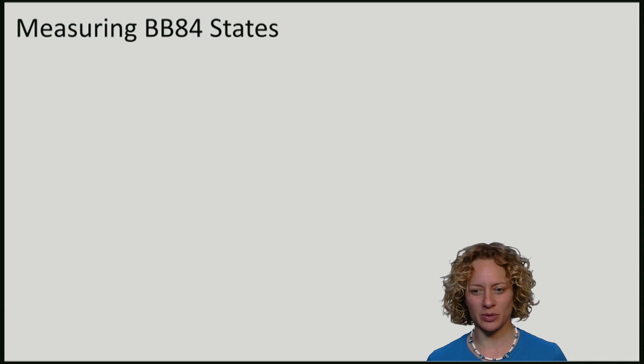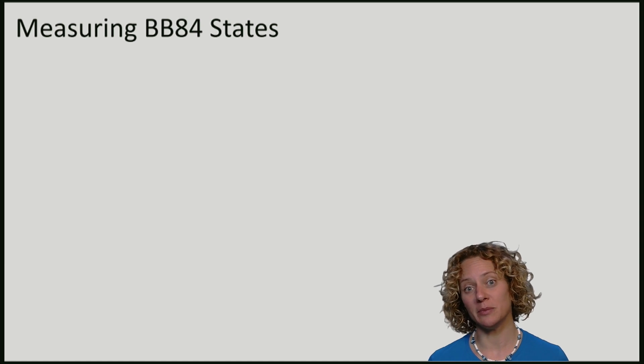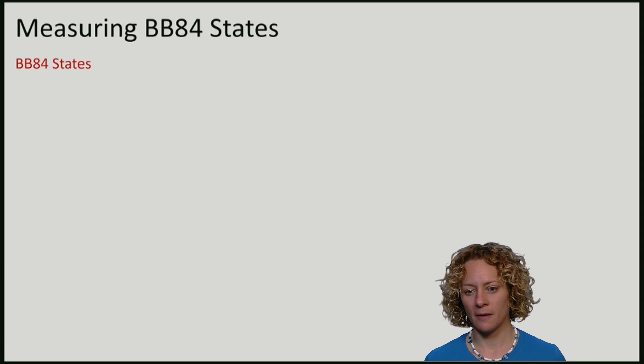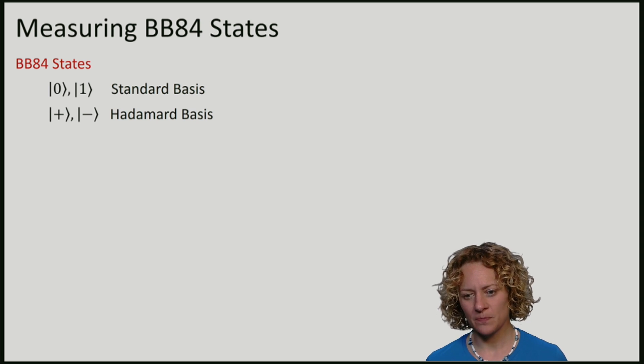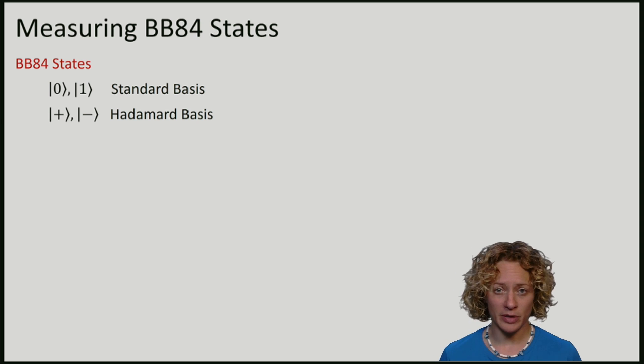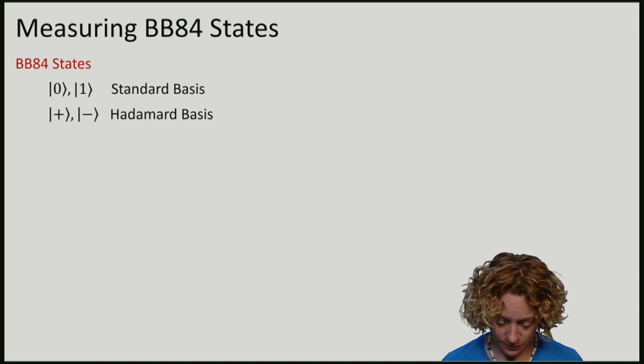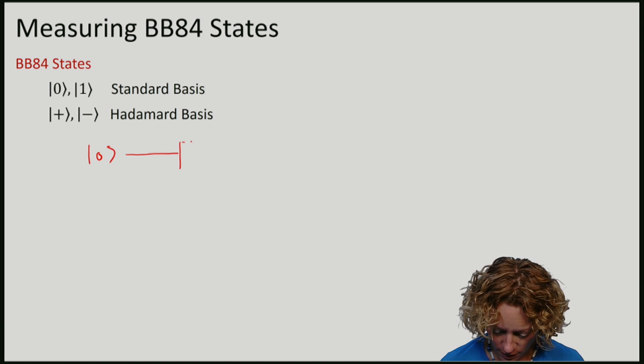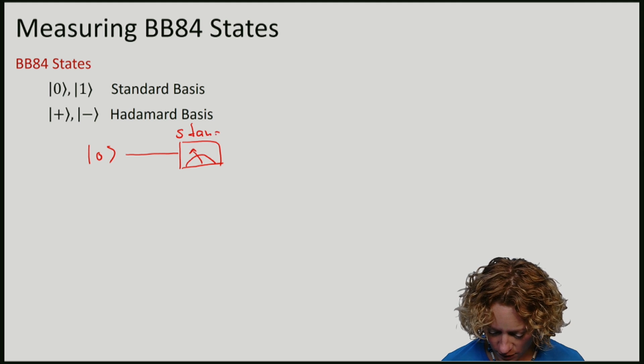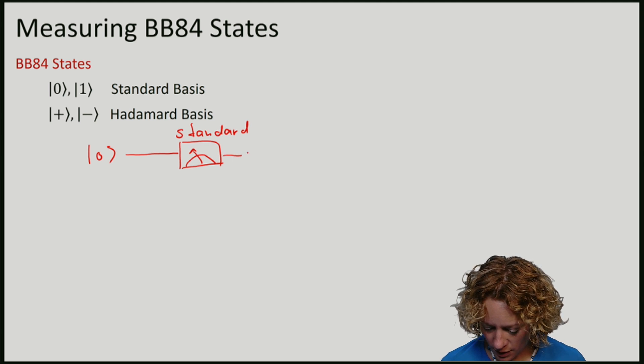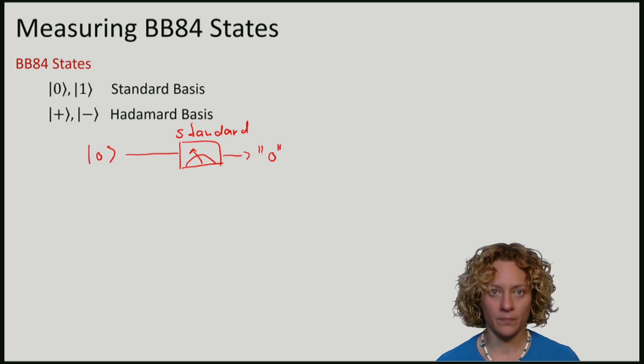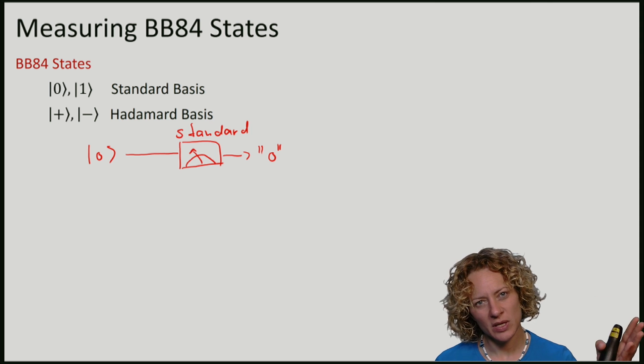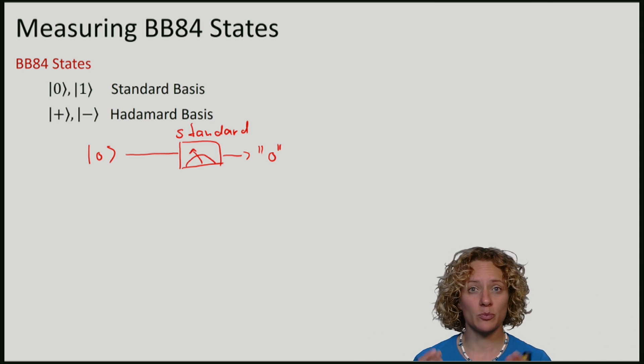There's one important property of BB84 states and BB84 measurements. We have two bases: standard and Hadamard. If I prepare a state in the standard basis, say zero, and later measure it in the standard basis, I always obtain outcome zero and can perfectly recover what the state is.